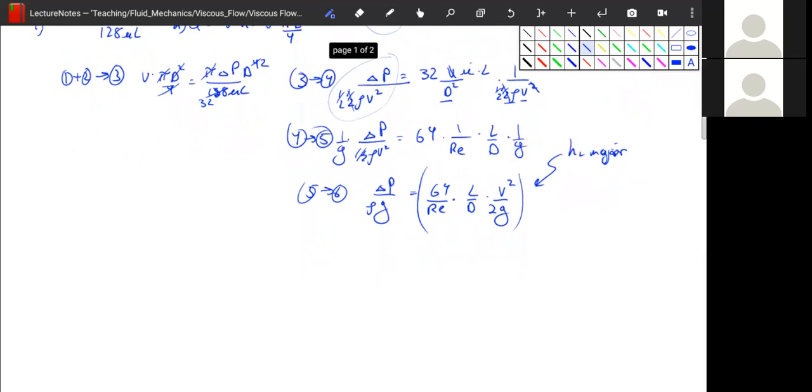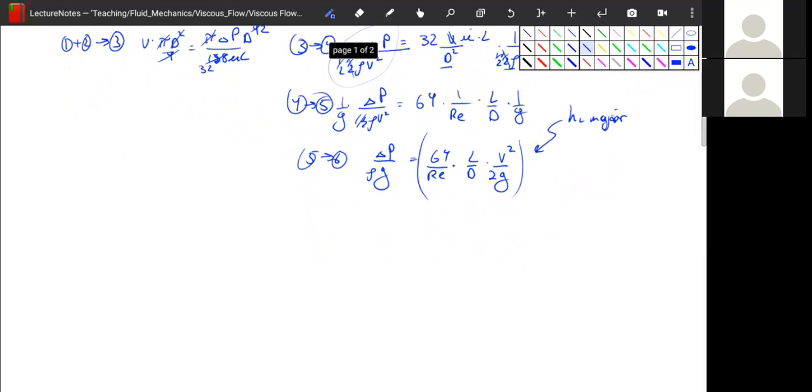And what's useful about this is that it turns out fully developed flow follows a repeatable pattern. We end up getting that we have some constant, which we call the friction factor, times l over d, which is our length of our pipe, times the diameter of our pipe, times v squared, which is the average velocity, divided by 2g. And this is equal to our head loss major.